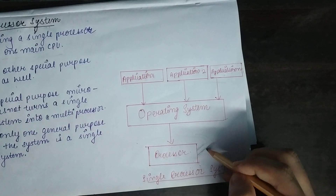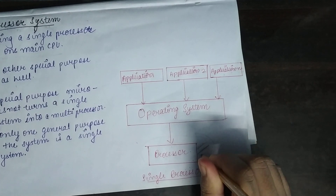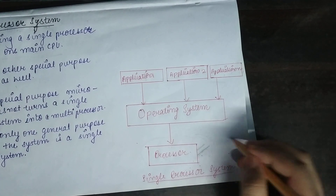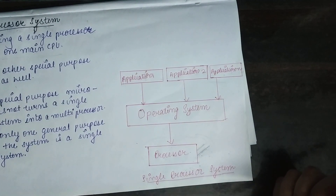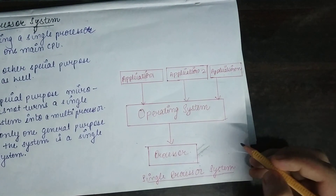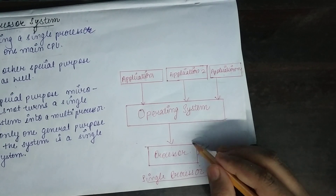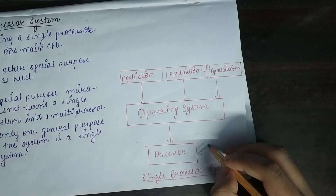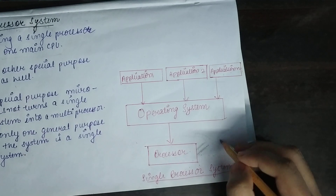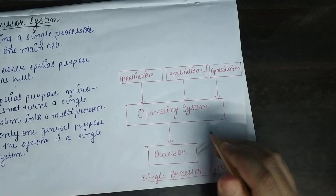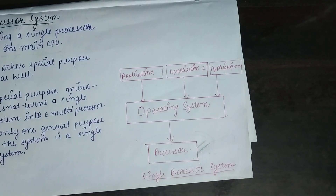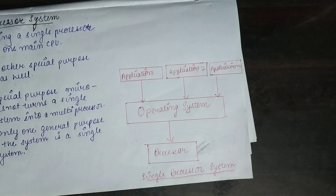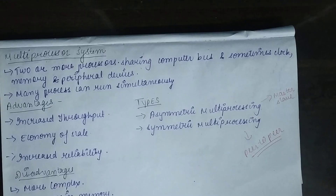What if we had two processors? Even if the first processor failed, we would still have the second one, which can take the load of the first processor. That is what happens in a multi-processor system.